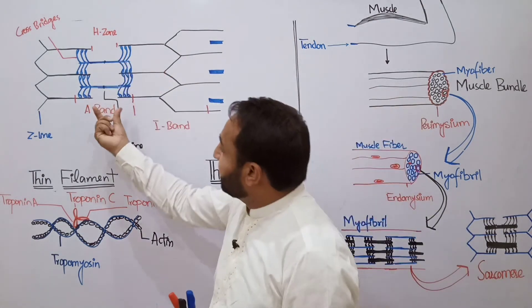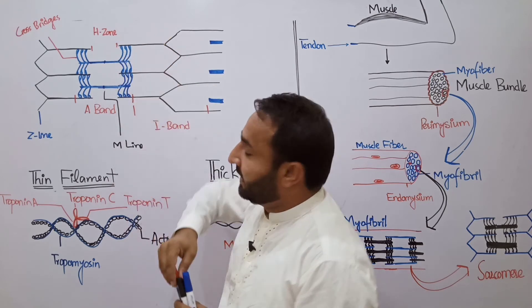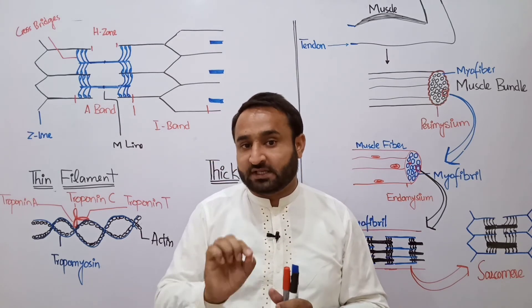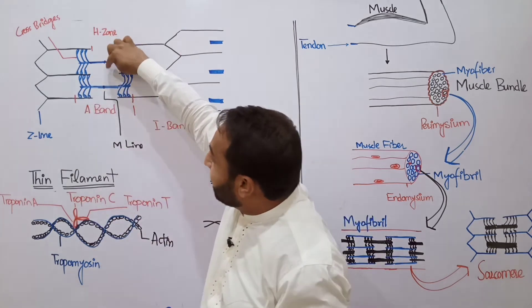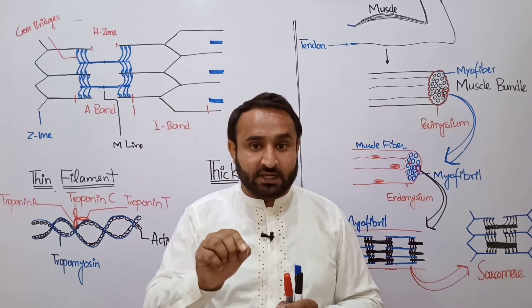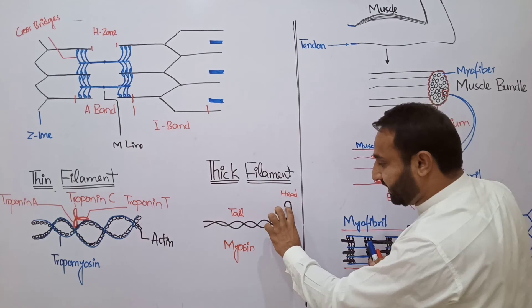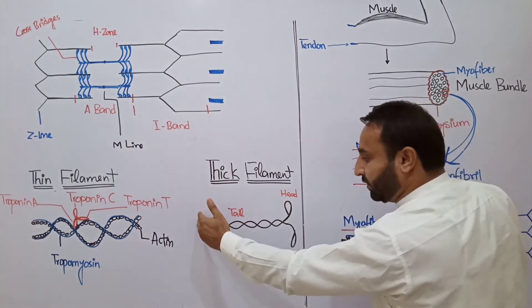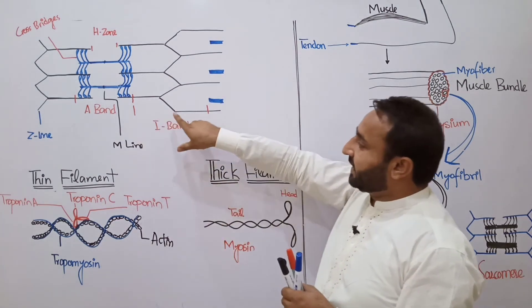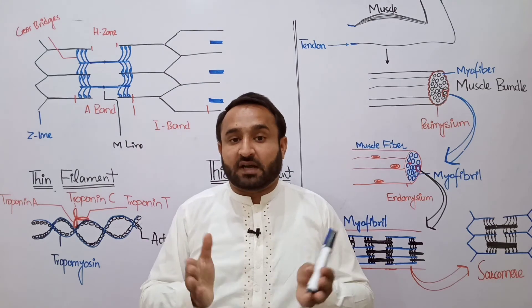Within the A-band there is an area where both thin and thick filaments overlap. There is also an area where no thin filament is present — this appears bright, meaning there is a bright region inside the dark band — called the H-zone. 'H' stands for 'helle' (bright). In the center of the H-zone there is a line called the M-line; 'M' stands for mid-line. The Z-line is the place where actin filaments attach. The tails of myosin thick filament from both sides come and combine at the M-line.